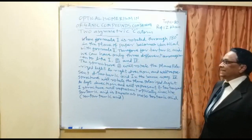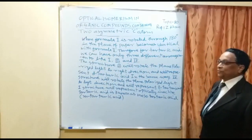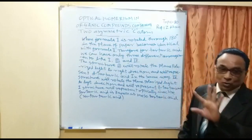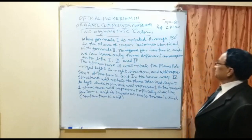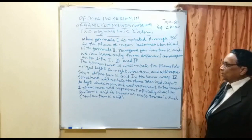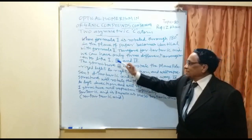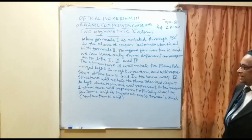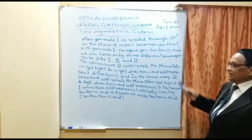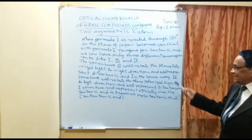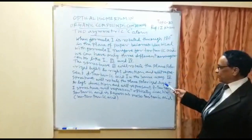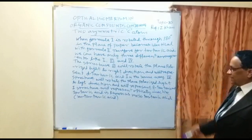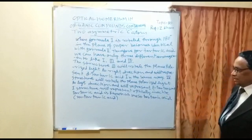Formula one, when rotated through 180 degrees in the plane of paper, becomes identical with formula two. So out of these two, only one is taken because they are identical. Therefore for tartaric acid we can have only three different arrangements: structures one, three, and four. Structure three rotates plane-polarized light to the right and represents dextro tartaric acid. Structure four rotates plane-polarized light to the left and represents L-tartaric acid.